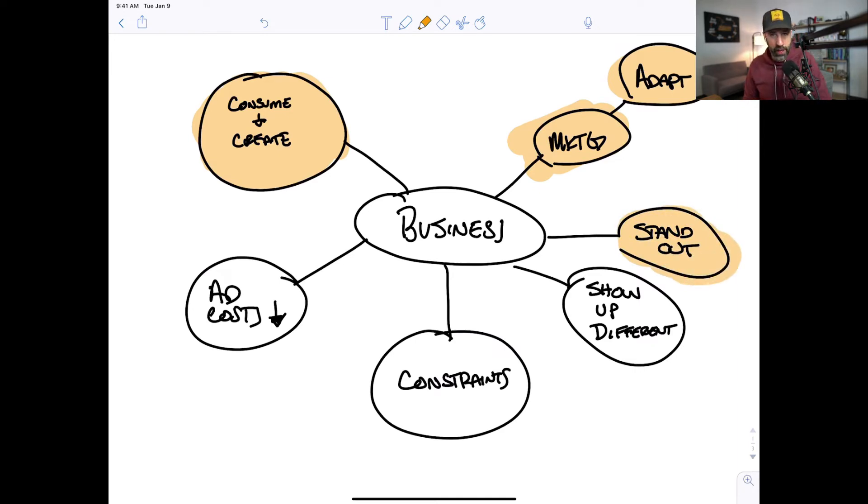If you just be quiet and kind of hide in the shadows, guess what? You're going to be one of those businesses that probably doesn't survive. So by adapting your messaging, by constantly creating, by fine tuning the things that you currently have going, by doubling down, you will stand out by doing that. You're also going to probably show up differently. Ask yourself, how can I show up differently than the way that I have been? How can my marketing adapt? How can I make this change? Again, look at the opportunity of these constraints.